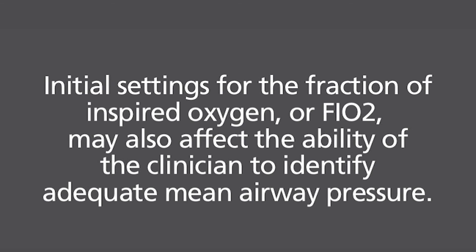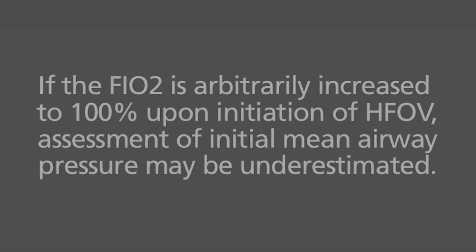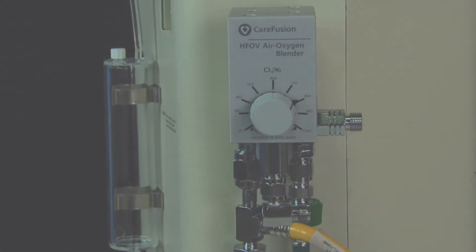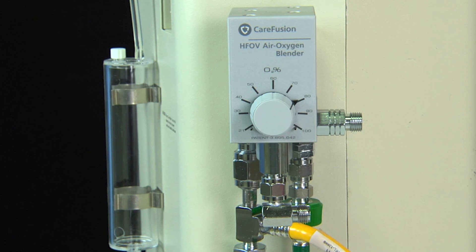Initial settings for the fraction of inspired oxygen, or FIO2, may also affect the ability of the clinician to identify adequate mean airway pressure. If the FIO2 is arbitrarily increased to 100% upon initiation of HFOV, assessment of initial mean airway pressure may be underestimated. By increasing the FIO2 incrementally by 10–15% during the transition to HFOV, the relative effects of mean airway pressure manipulations are more readily recognized.